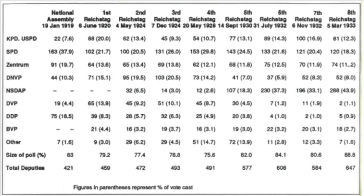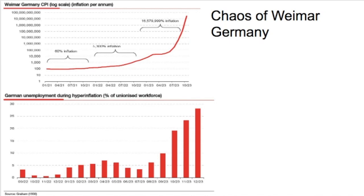What we've looked at previously is the chaos of Weimar Germany: the political instability, the social upheaval, the problems of the post-war climate, and obviously the economic problems the Weimar had to deal with — a couple of those being unemployment and hyperinflation. The hyperinflation really ramped up in 1923 due to the Ruhr crisis of the French invading part of Germany and strikes, which basically means your money becomes worthless.